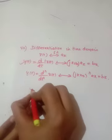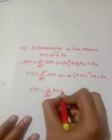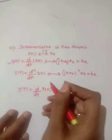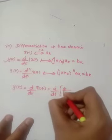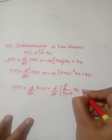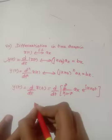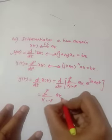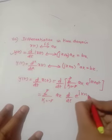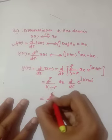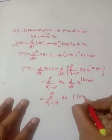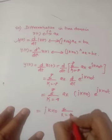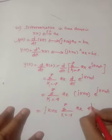To prove this, consider y(t) = d/dt · x(t). We know x(t) = summation from k=−∞ to ∞ of ak · e^(jkω₀t). Differentiating: d/dt [summation ak · e^(jkω₀t)] = summation ak · jkω₀ · e^(jkω₀t) = jkω₀ · summation ak · e^(jkω₀t).